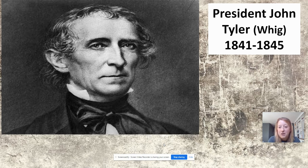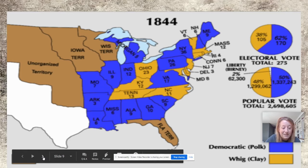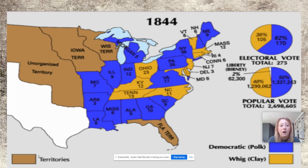President John Tyler assumed the presidency after William Henry Harrison's death about a month after his inauguration. Tyler worked very hard to convince Congress to annex Texas throughout his presidency — he did a lot of the legwork — but was unfortunately unsuccessful. When the Democratic Party ran candidate James K. Polk for the election of 1844, he also ran on a pro-Texas platform. Nicknamed Young Hickory, he was a protege of Andrew Jackson's and was very much pro-Texas annexation and pro-slavery.